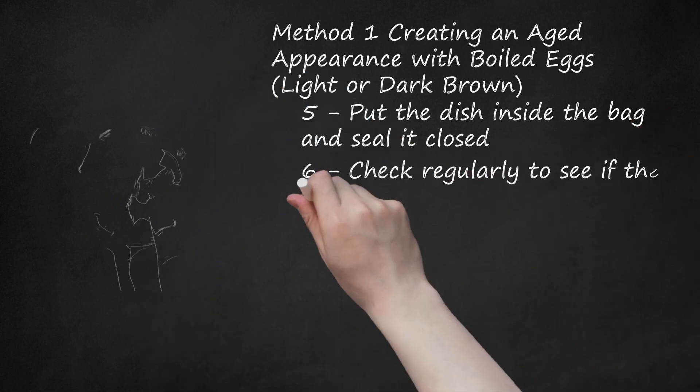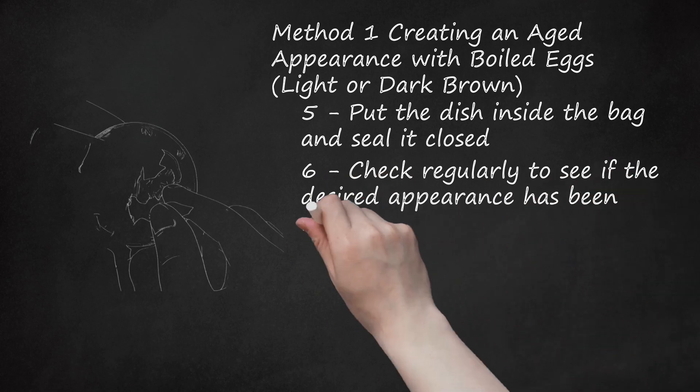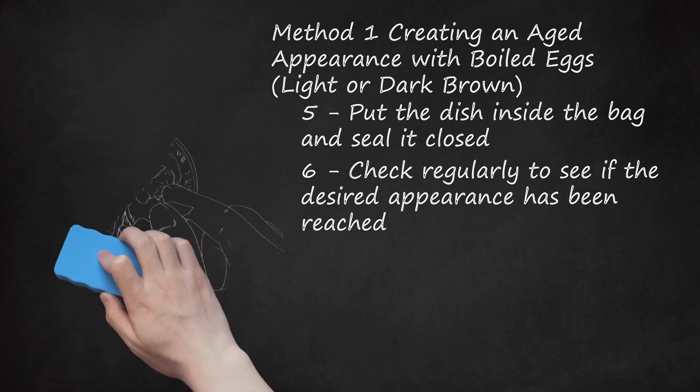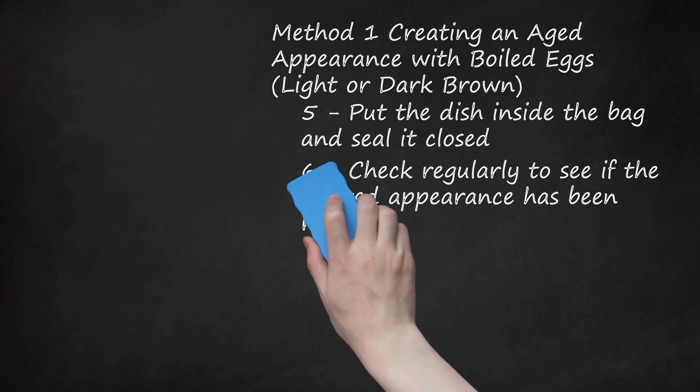Step 6: Check Regularly to See If the Desired Appearance Has Been Reached. You may start to see results as soon as 15 minutes after you put the copper in the bag, but the copper often takes 4 to 8 hours to reach a dark brown appearance. The copper should grow darker the longer it remains in the bag, and large surfaces will acquire an aged, uneven appearance. Remove when you've achieved the look you were going for. Wash the copper item afterward to remove any pieces of egg and to see what the item looks like when clean.